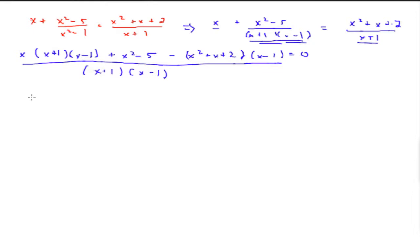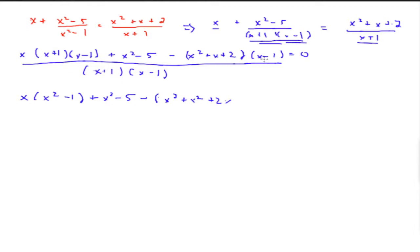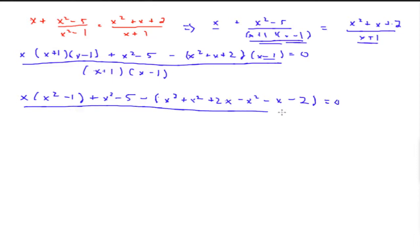Now the next step is to expand everything. So it's going to be x times x squared minus 1, plus x squared minus 5, minus the expanded bracket. x times x squared gives you x cubed, x times x gives you x squared, and x times 2 gives you 2x. Then multiplying by negative 1: negative 1 times x squared gives negative x squared, negative 1 times x gives negative x, and negative 1 times 2 gives negative 2. So it's going to equal 0.